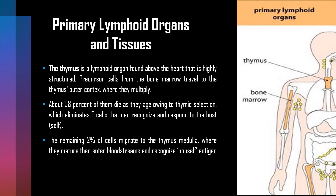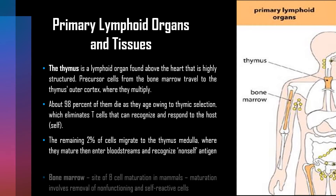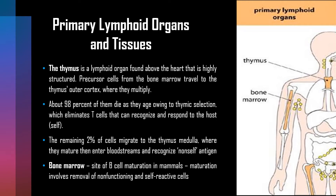Bone marrow is the site of B cell maturation in mammals. Maturation involves removal of non-functioning and self-reactive cells. A selection mechanism within the bone marrow eliminates non-functioning B cells and those that recognize and respond against self — similar to thymic selection during T cell development. The rest of the B cells mature in the bone marrow before entering the bloodstream.